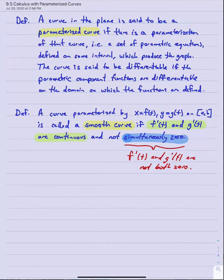Without going into full detail, the word smooth suggests there are no abrupt changes in the graph like sharp corners. Continuous functions have the property that small changes in the input produce correspondingly small changes in the output — there are no sudden abrupt movements. So if the derivatives, which measure how the graph is turning in the x and y directions, are both continuous, it means the graph can't lurch or make big movements in either direction when there is a relatively small change in t.